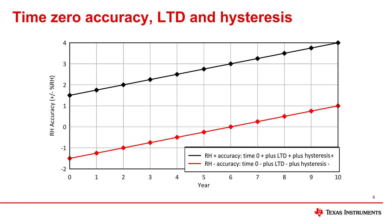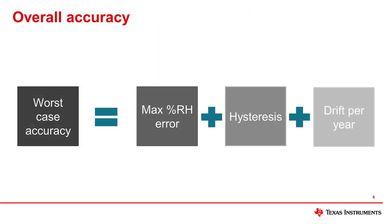This graph illustrates how long-term drift and hysteresis add on to the time zero accuracy as the lifetime of the part increases. A sensor's overall humidity accuracy is a combination of maximum percentage error, hysteresis, and long-term drift per year.